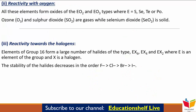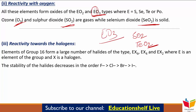अब चलते हैं Reactivity with Oxygen पे। जितने भी elements हैं, वो oxides बनाते हैं EO₂ और EO₃ type की। Ozone (O₃) और Sulfur dioxide (SO₂) gases होती हैं, जबकि Selenium dioxide (SeO₂) solid form में exist करती है। Dioxide की reducing property SO₂ से TeO₂ तक जाने पर कम होती जाती है — SO₂ reducing agent है जबकि TeO₂ oxidizing agent की तरह काम करती है। EO₂ और EO₃ दोनों ही acidic nature की होती हैं।